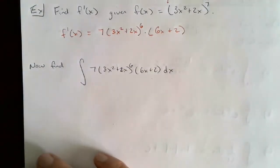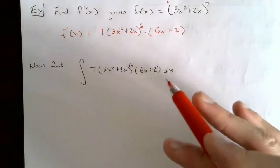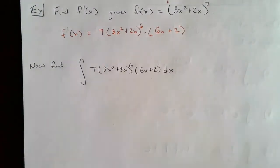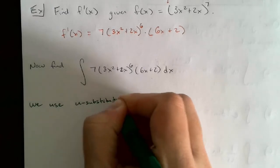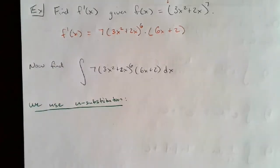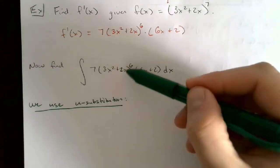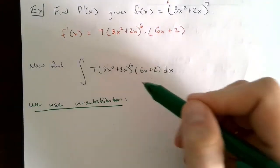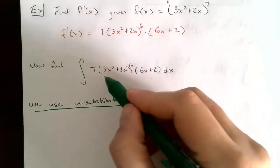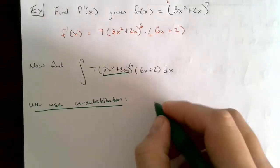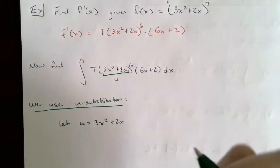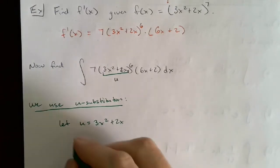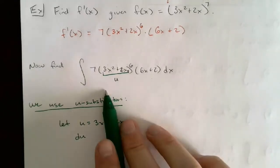So we use u-substitution. The 'u' is just a dummy variable — it could be any variable that isn't x. Looking at this integral, I see (3x² + 2x) raised to the sixth power. Since one of our target forms is u to a power, I'll let u equal the inside: u = 3x² + 2x.